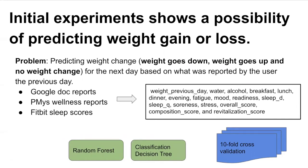I have given a basic idea about the data collected for this PM dataset. Now we are going to investigate a simple machine learning application using this dataset. In this simple machine learning problem, we are going to predict three classes for the next day of the user based on data from previous days. These three classes are: weight goes down, weight goes up, and no weight change.